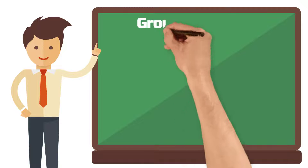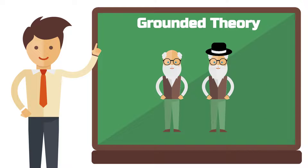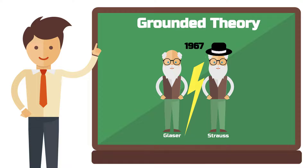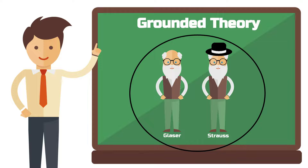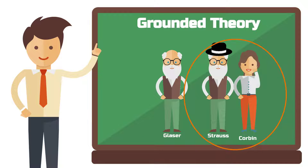Today we will focus on the origin of grounded theory, the approach by Glaser and Strauss from 1967, what remains relevant today, and the significance of the major dispute between the two. After watching this video you will not only be able to participate in discussions about grounded theory, but you will also know whether you should conduct your qualitative study following the recommendations of Glaser and Strauss or Strauss and Corbin.